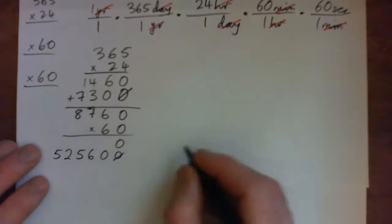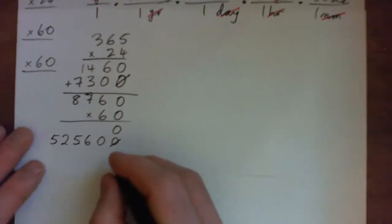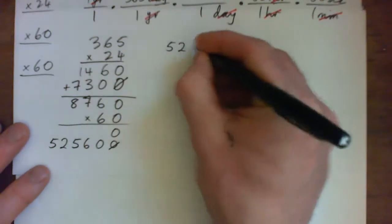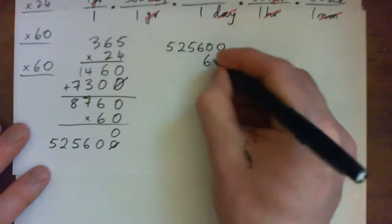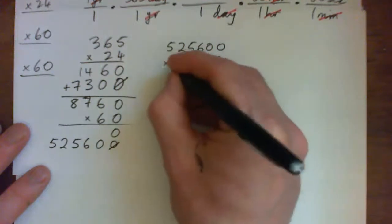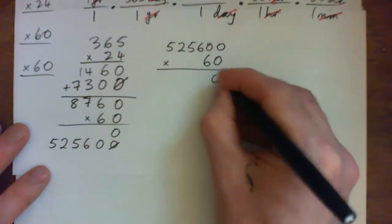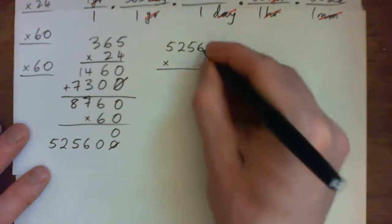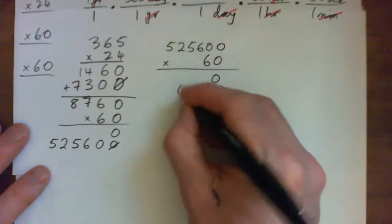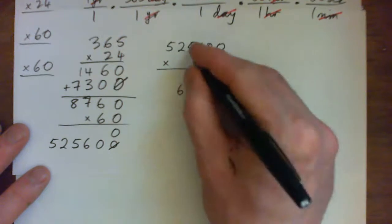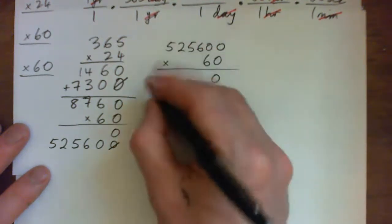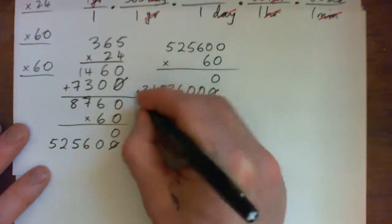Now multiply by 60 again. By golly, I really should have used a calculator. I don't mind if you guys use a calculator for this. 0 times everything is 0, put down the 0. Multiply by 6: 6 times 0 is 0; 6 times 0 is 0; 6 times 6 is 36, carry 3; 6 times 5 is 30, plus 3 is 33, carry 3; 6 times 2 is 12, plus 3 is 15, carry 1; 6 times 5 is 30, plus 1 is 31. Adding them together: 3, 1, 5, 3, 6, 0, 0, 0.